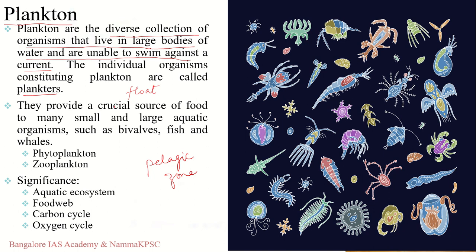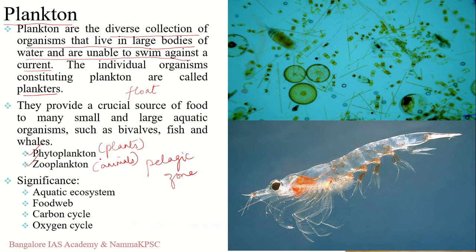Plankton broadly refers to microscopic organisms whose free movement is restricted by the force of moving water. Plankton is classified into two types: phytoplankton, which represents plants, and zooplankton, which represents animals. Phytoplankton are microscopic plants that play a huge role in the marine food web — they have chlorophyll and through photosynthesis use the sun's energy to support themselves.